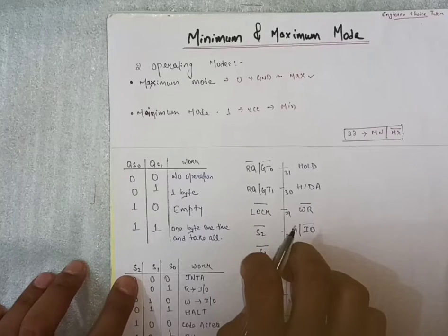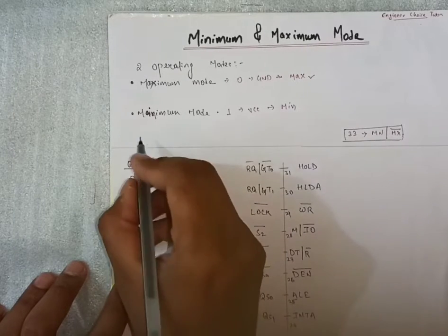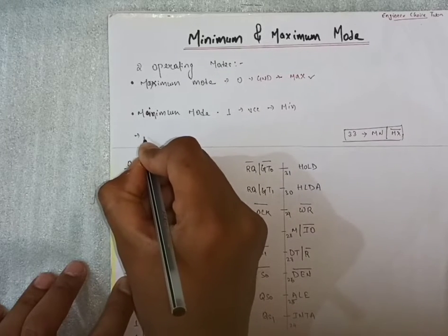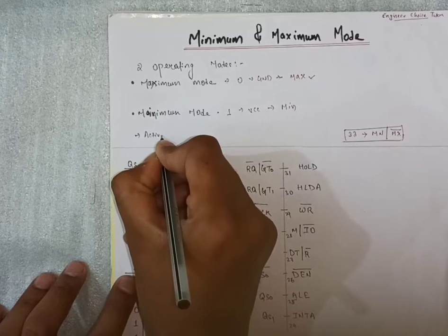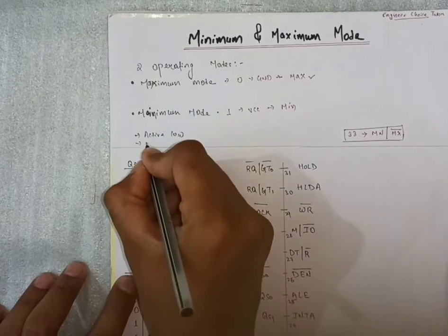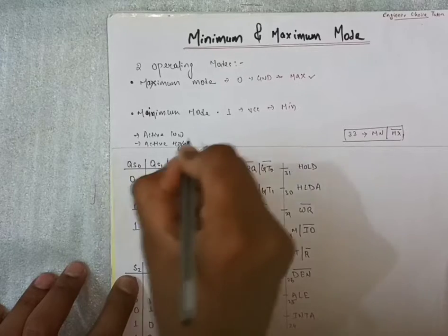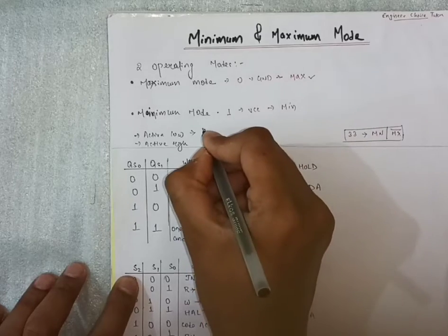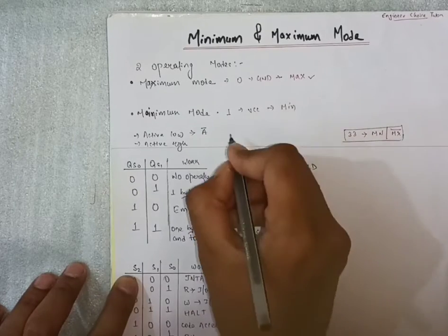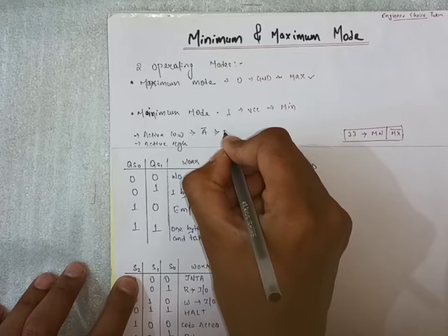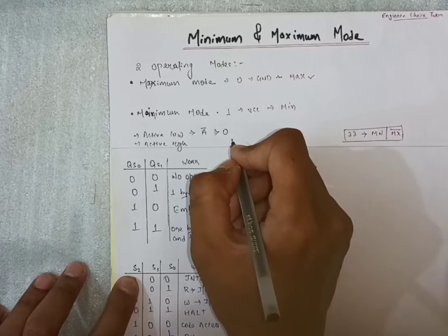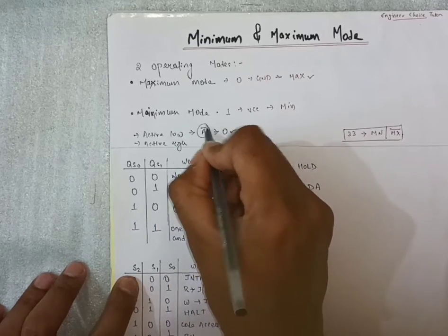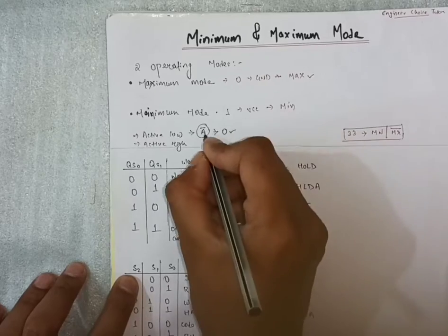Before starting this video, I want to give a small tip or trick that you can use everywhere. We have two types of pins: active low and active high. Active low means some pin name, suppose a pin is there. If a bar is there, then the value will be zero means only it works or only it gives some value. If its value is zero, this pin is only going to work when its value is zero because bar is there.